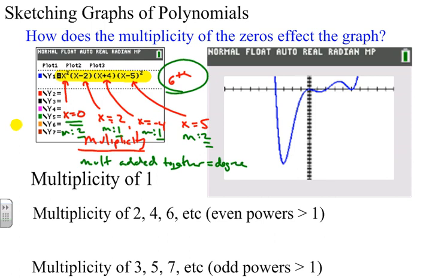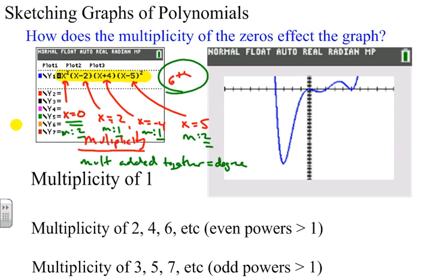Now, how do these different multiplicities affect a graph? Well, when we have a multiplicity of 1, or any odd multiplicity of 3, 5, or 7, or any odd power greater than 1, what we have is, you notice that here, if we plot this out,